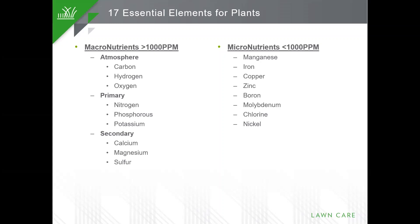For example, if a bag is a 20-5-10, there's going to be 20% nitrogen, 5% phosphorus, and 10% potassium. The secondary macronutrients are essential for plant health and growth — they are calcium, magnesium, and sulfur. In certain instances, we'll see calcium and sulfur listed on the analysis on the bag. An example would be calcium nitrate, which is a 15-0-0-15.5. With sulfur, the example would be ammonium sulfate, which is a 21-0-0 with 24% sulfur.